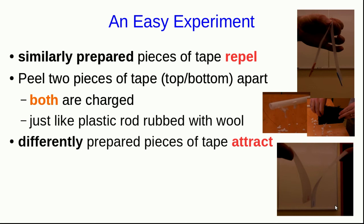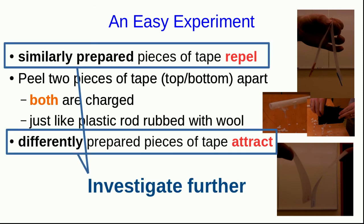If you bring the top and the bottom pieces of tape together, you'll find that they're attracted to each other. Remember that before, when we had two pieces of tape that we'd prepared in identical ways, they repelled each other. But now we have two pieces of tape that we've prepared differently. One of them was peeled off of the other, and we see that they attract each other. This is something complicated going on, and we need to investigate it further.